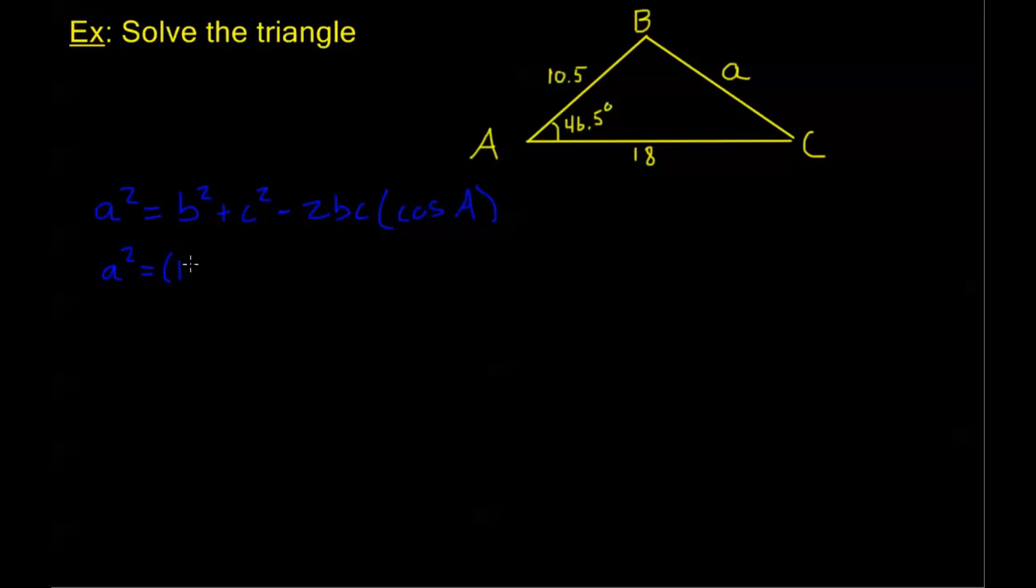That gives us a squared equals - now my b is 18, so it's going to be 18 squared, plus my c is 10.5, that's 10.5 squared minus 2 times 18 times 10.5 times cosine of A, which is cosine of 46.5 degrees. Plugging this all into our calculator, this gives me that a squared is about equal to 174.5.